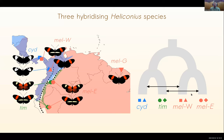So there are two opportunities for gene flow: in the west of the Andes between cydno and western melpomeni, and in the east between timaretta and eastern melpomeni. This tree shows what is believed to be the species branching pattern for these taxa, but of course depending on where you look in the genome, you might not see exactly that - and that's kind of the problem and the interesting part of the story.